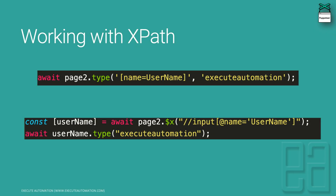Working with XPath. We all know that while working with XPath, the way we identify an element is a little bit different. As you can see here, we have a page type for the username with 'execute automation.' The name equals username acts more like a CSS selector here, but it's not — it's just the way we select the element. For working specifically with XPath, all you need to do is use $X, which is the same way we identify an element in the Chrome DevTools.